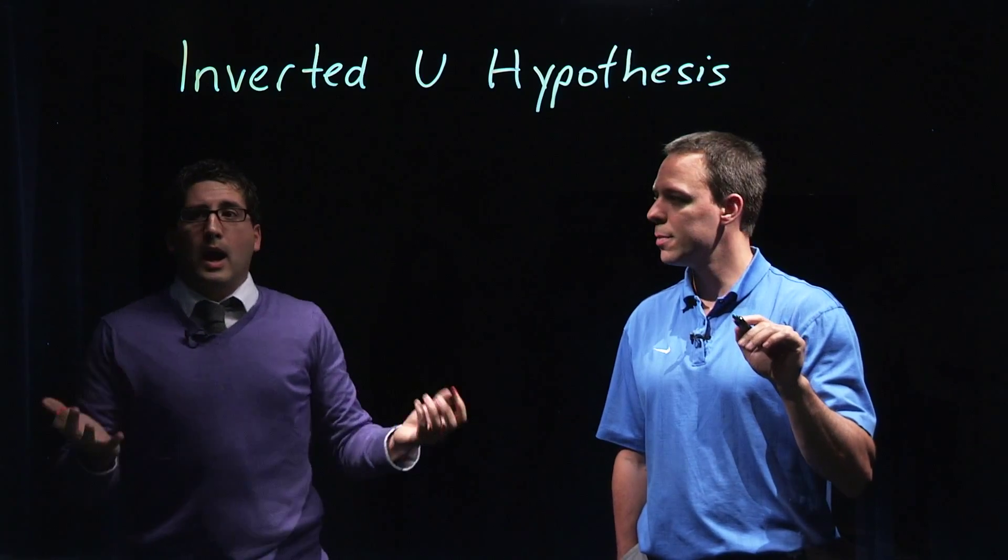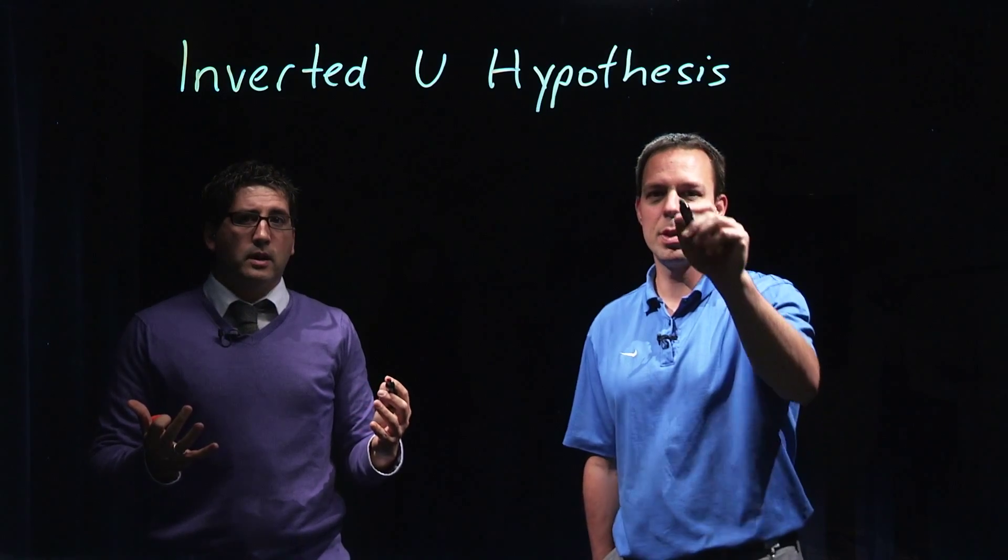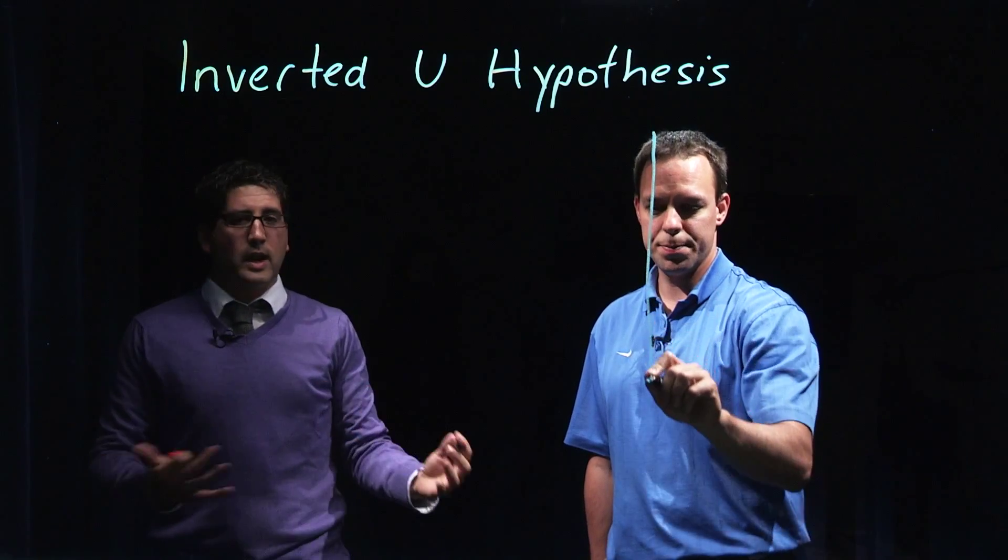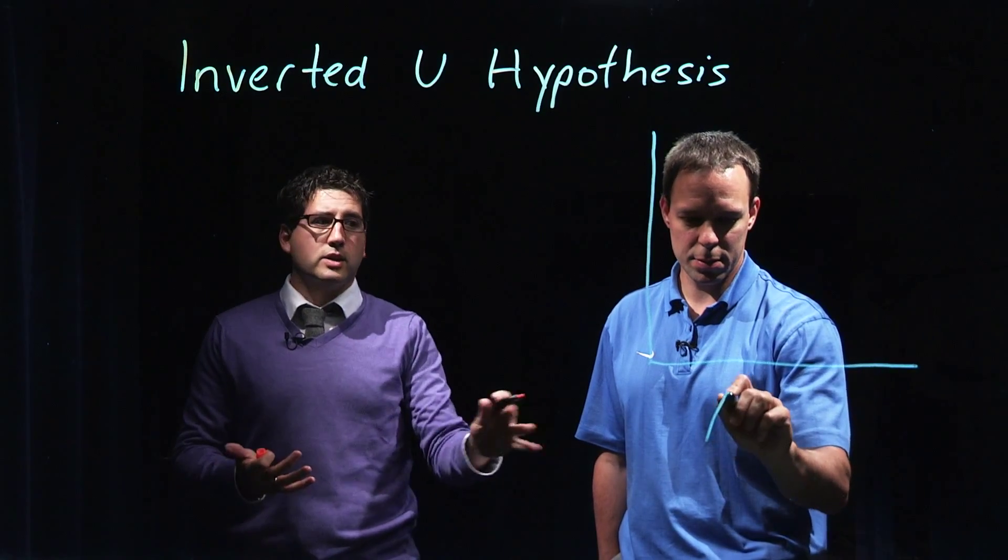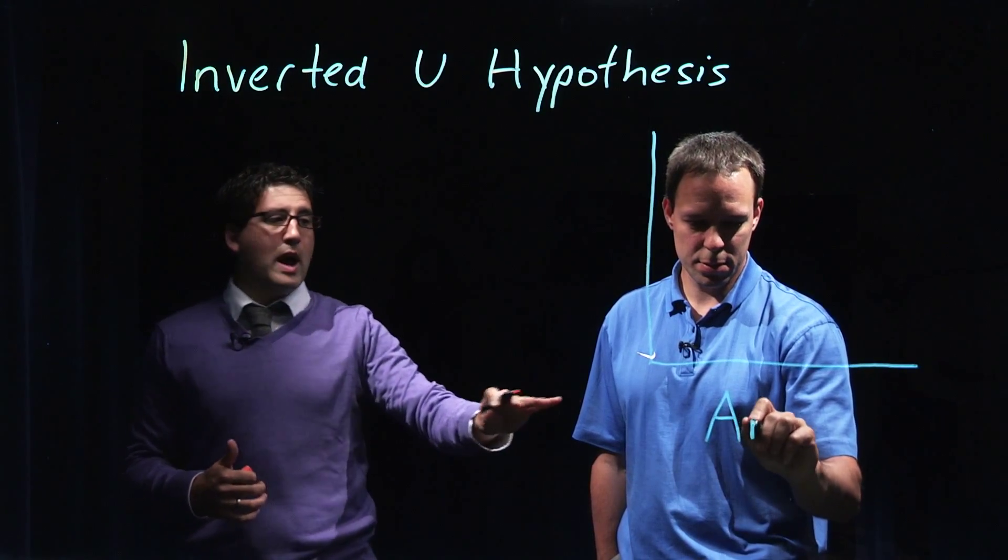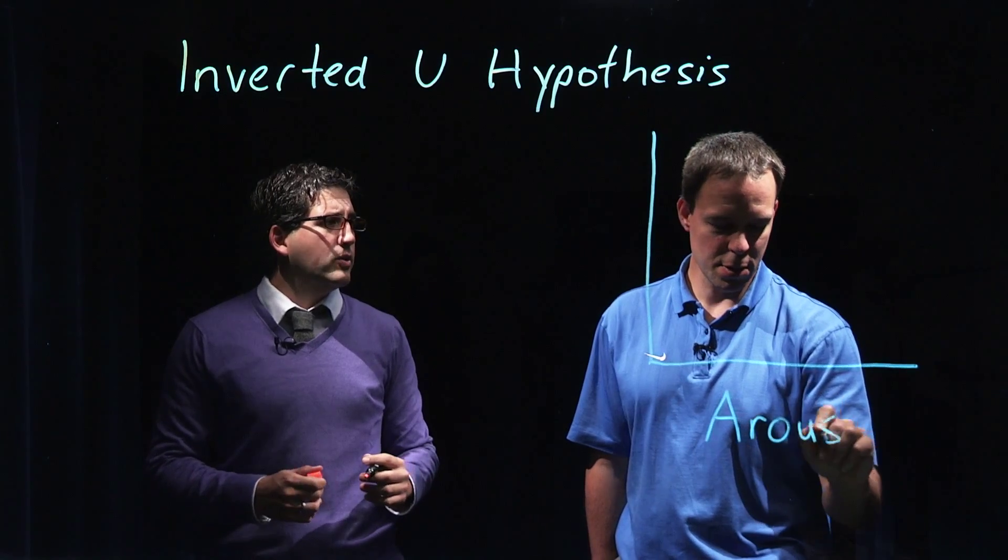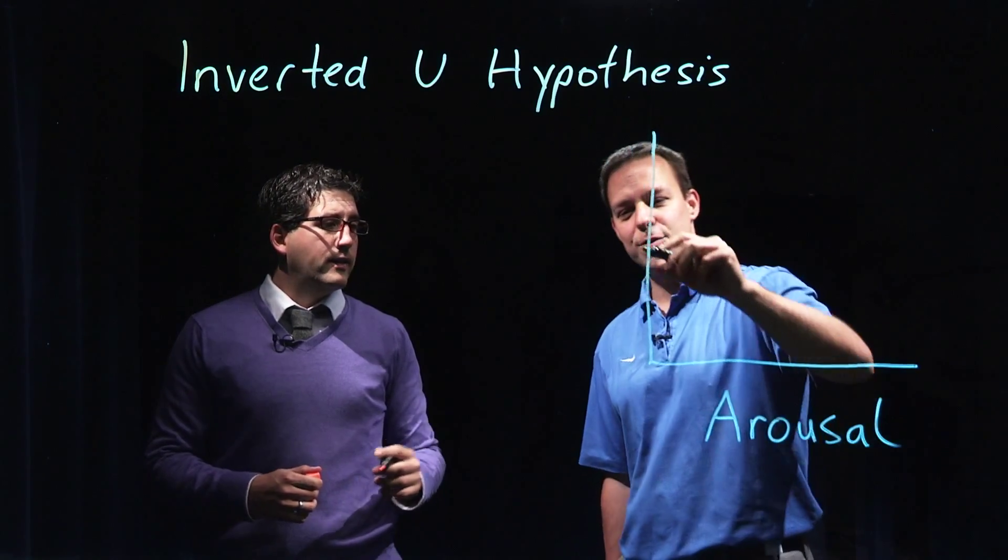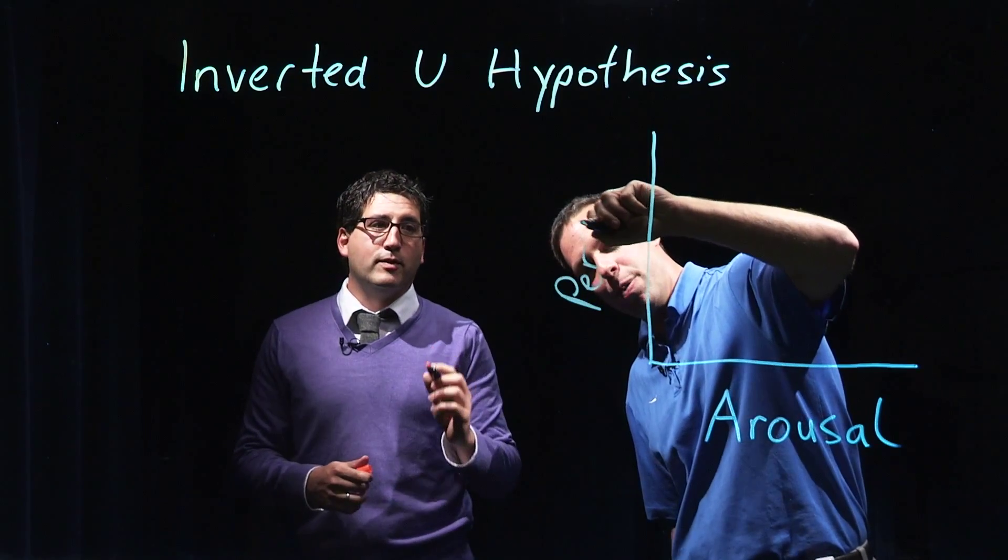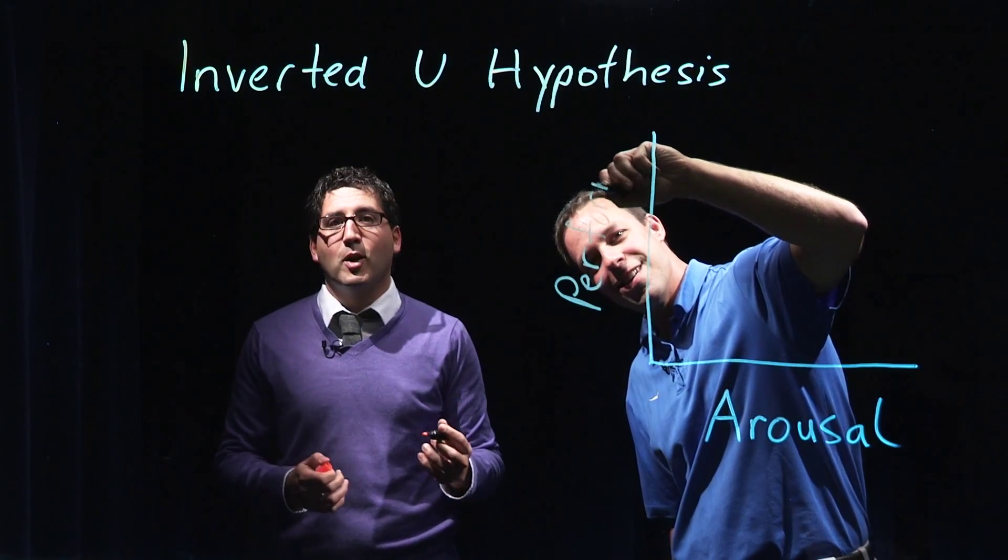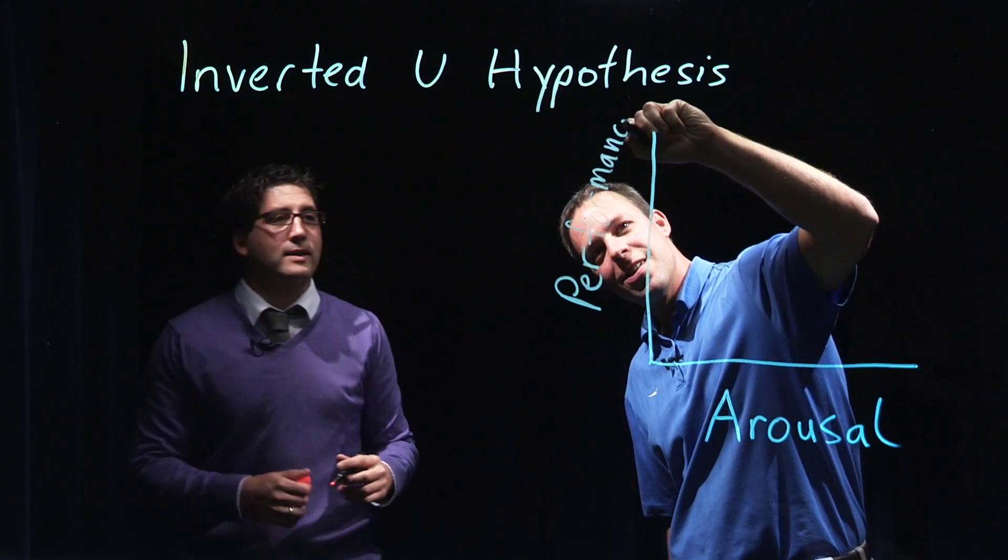So how many of you get a little bit nervous prior to a performance or prior to kind of anything? And what this inverted U hypothesis suggests, as Noah's dropping down here, so you've got arousal on the, which axis is that? I always forget. This would be the x-axis for you math majors. Yes, x-axis for the arousal. If not, that's just what we're going to be going with. And then the y-axis for performance.